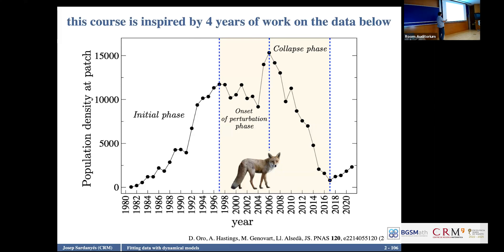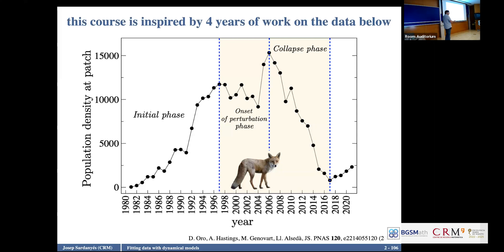In 1997, a few predators invaded the patch — there was a perturbation. Since then, there was a kind of decrease in the population, because many of the birds were leaving to other patches. Because these predators were like four or five animals, not more, this decrease cannot be explained by predation alone.